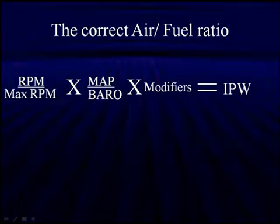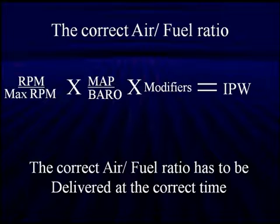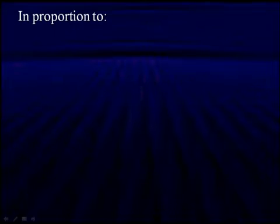We've done this with air-fuel ratio. We can control valve timing using the same approach. Remember how we controlled fuel delivery: we took the actual RPM of the vehicle, divided it by the maximum RPM, multiplied that times manifold absolute pressure values divided by barometric pressure, then multiplied by vehicle-specific modifiers, and came up with injector pulse width. We can do the exact same type of science with variable valve timing — calculated and adjusted for every single injection pulse.